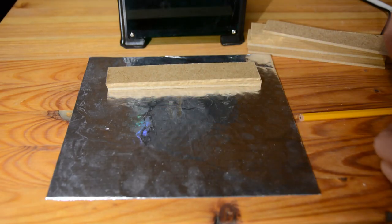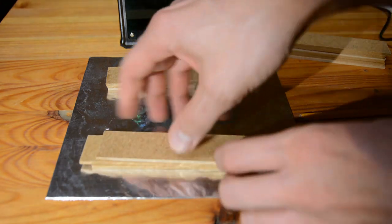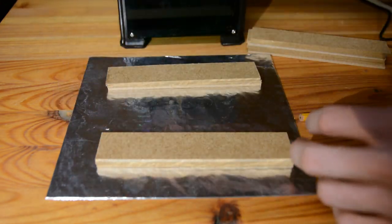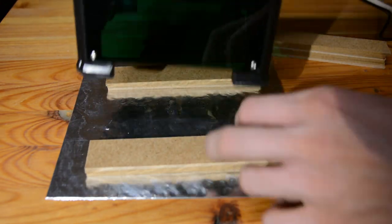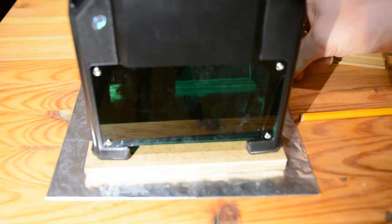Next we cut a few scraps of 3mm MDF to size. With these, we can raise the laser off the ground and put smaller objects such as this pen under the laser engraver.